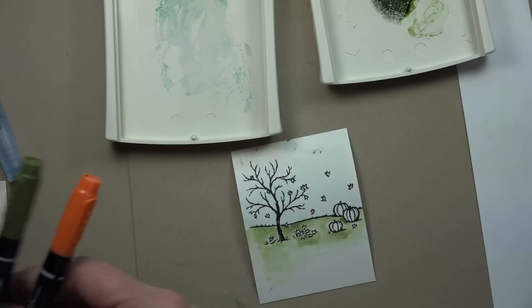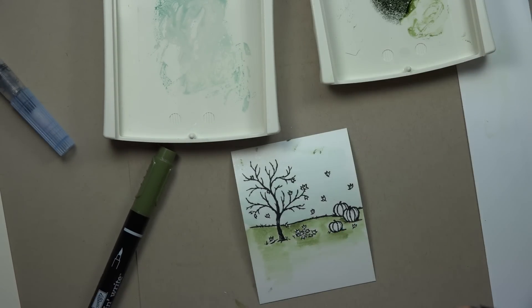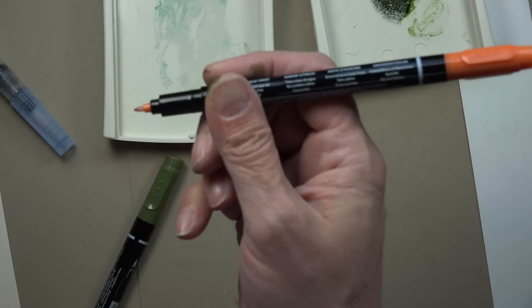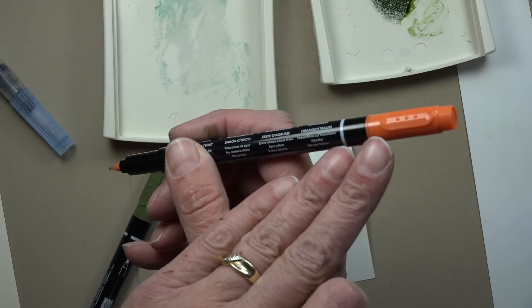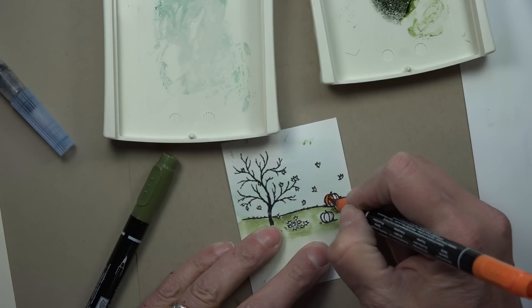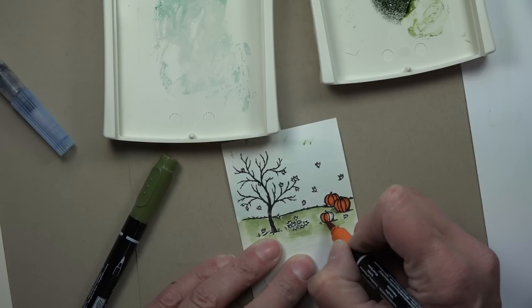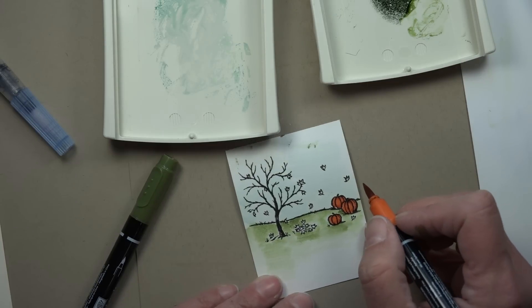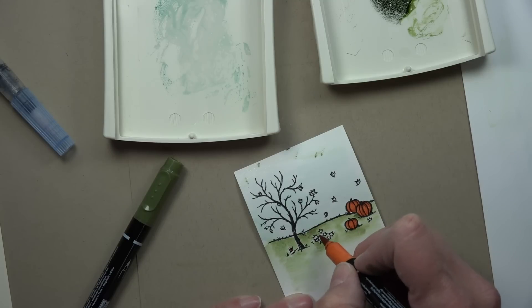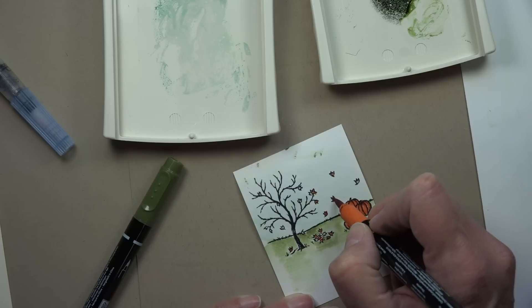Then I'm actually going to come in with a couple of markers and this is the tangelo twist. Our markers are great because they have a bullet point on one side and a brush end on the other. I'm going to go ahead and use the brush end and I am just going to color in my pumpkins and then dot a couple of these leaves with orange.